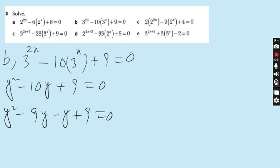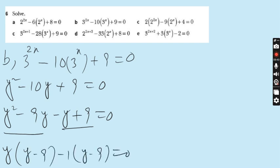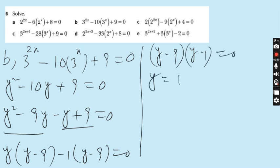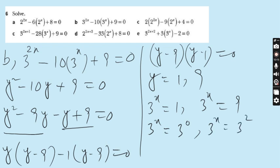Factoring: (y - 9)(y - 1) = 0, so y = 9 and y = 1. Since y = 3^x: 3^x = 1 = 3⁰ means x = 0, and 3^x = 9 = 3² means x = 2. So the answer is x = 0 or x = 2. Hope you enjoyed this part. Move to part C.